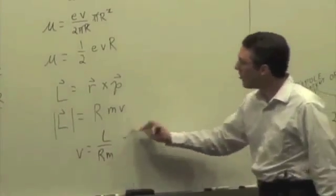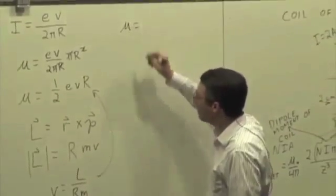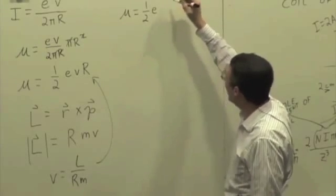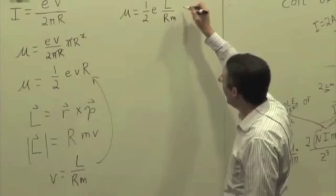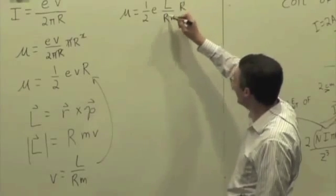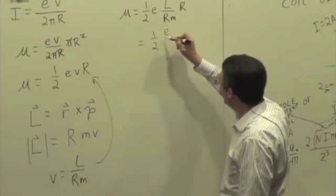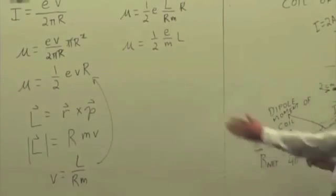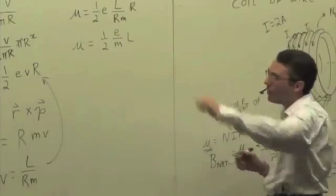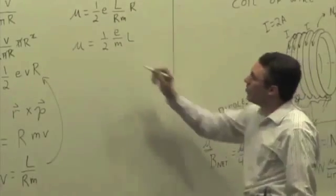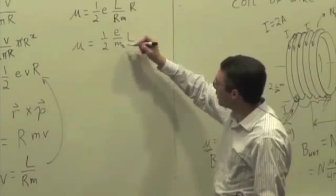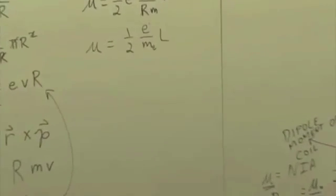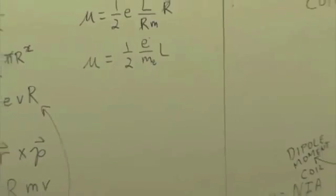Okay? Plug that back into here. U is equal to 1 half. I have E. I have L over Rm times r. So, in fact, the r is going to cancel out. I have 1 half E over m times l. So what this tells us is that the dipole moment for a single atom in orbit around, or a single electron, excuse me, in orbit around the atom, is 1 half electron charge divided by electron mass, those are constants, times its angular momentum. It's orbital or translational angular momentum as it's revolving around the center of the atom.